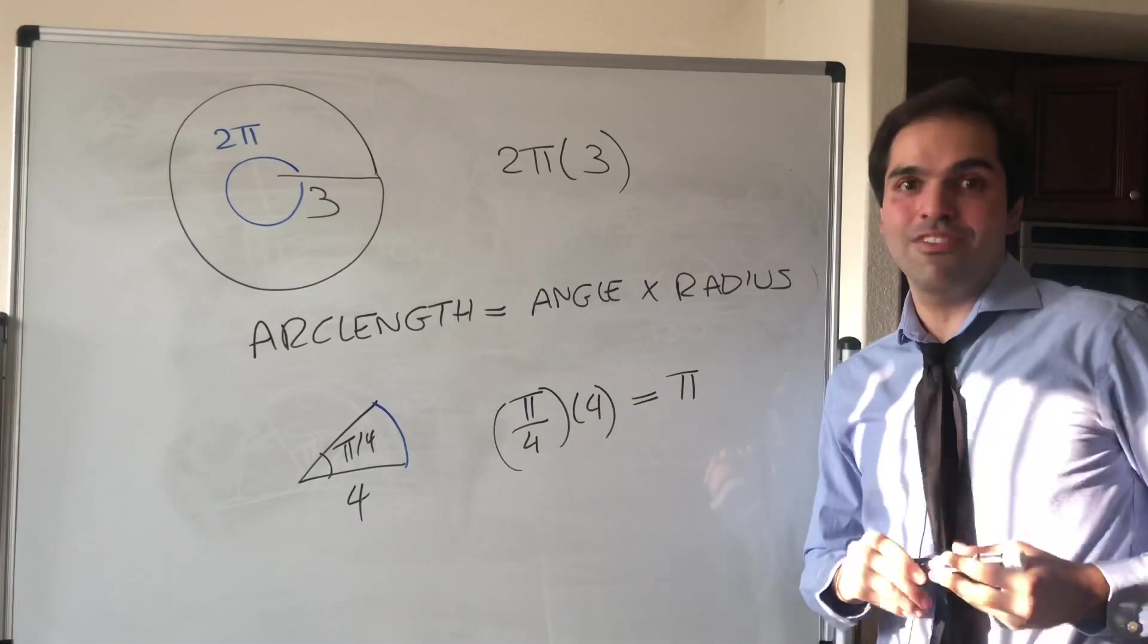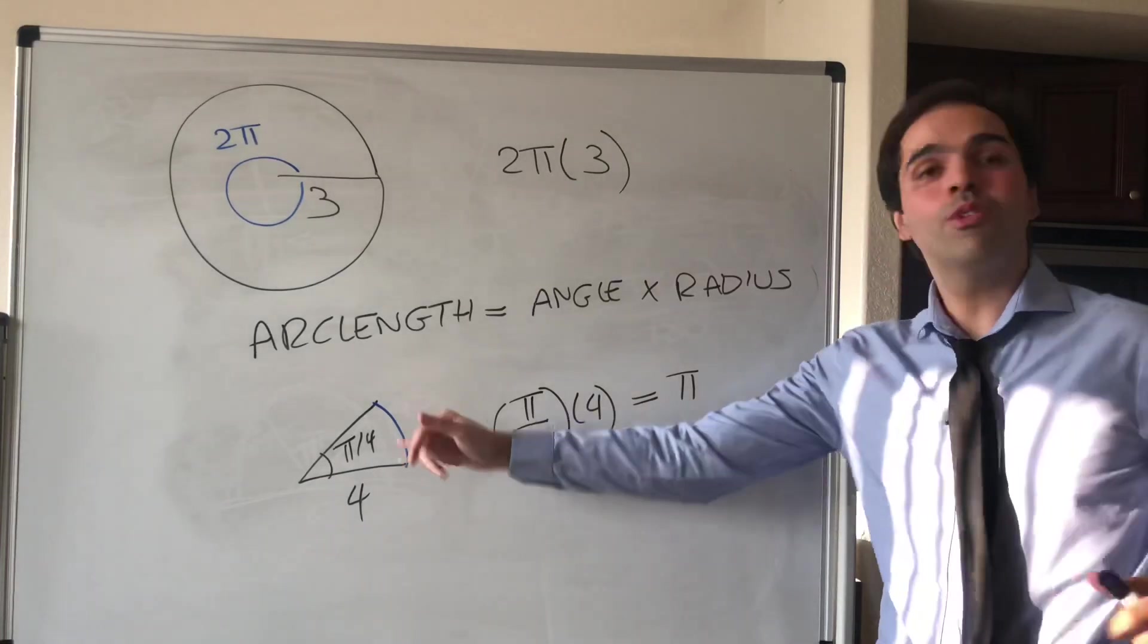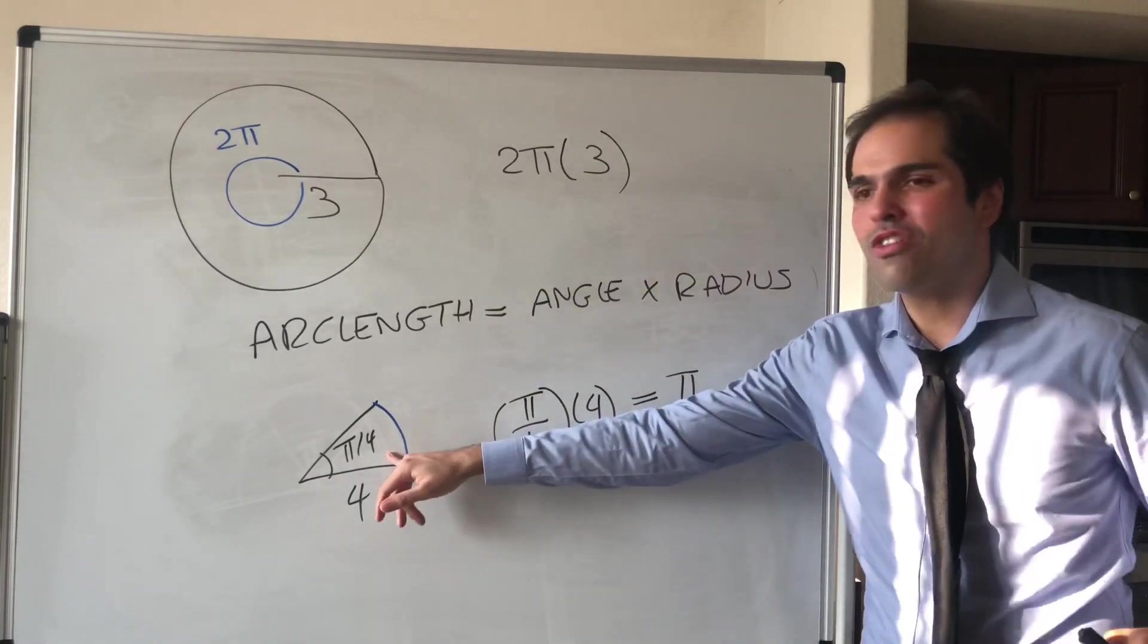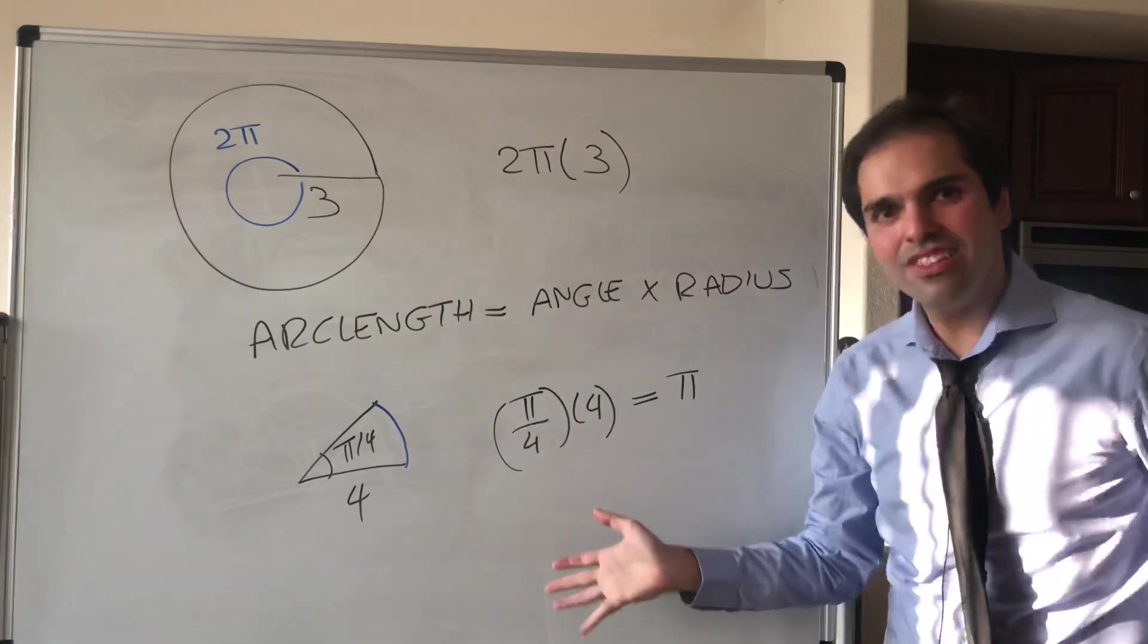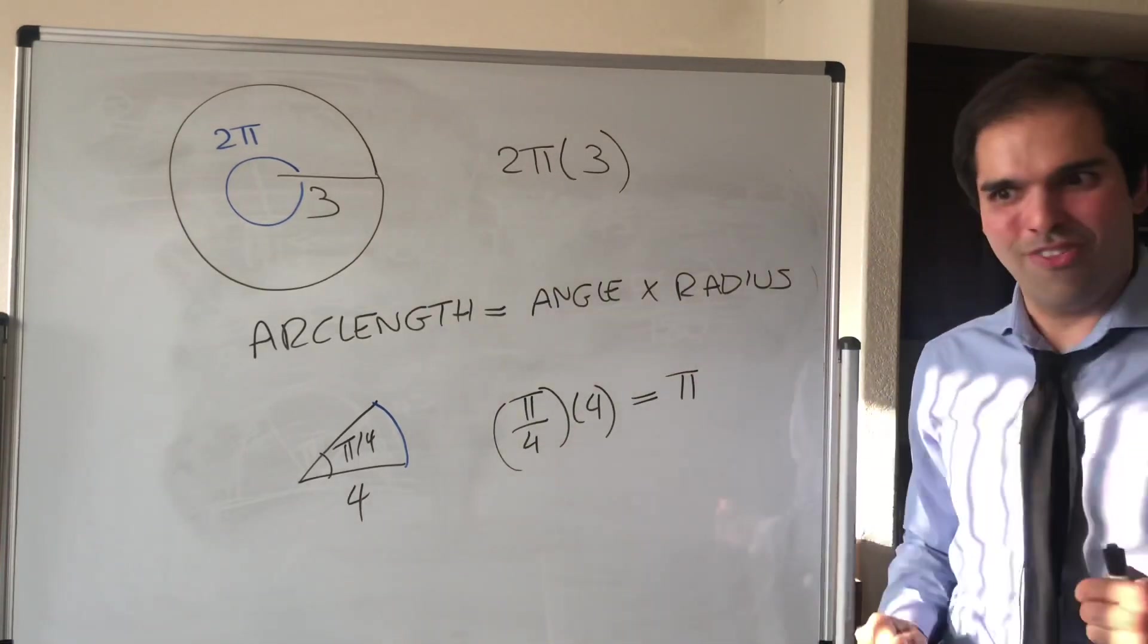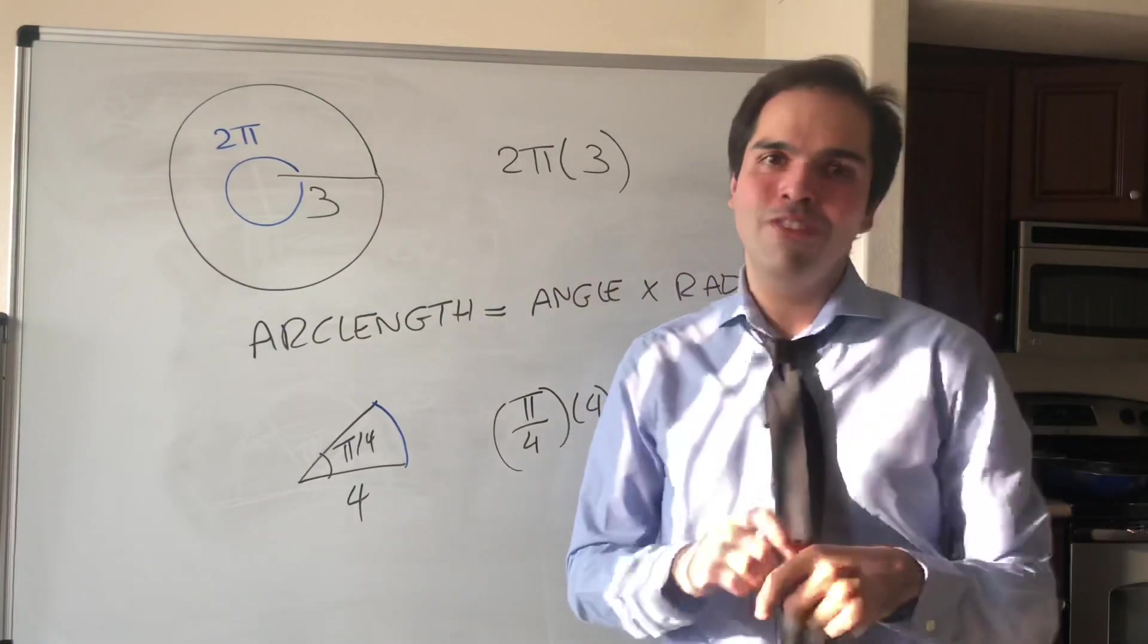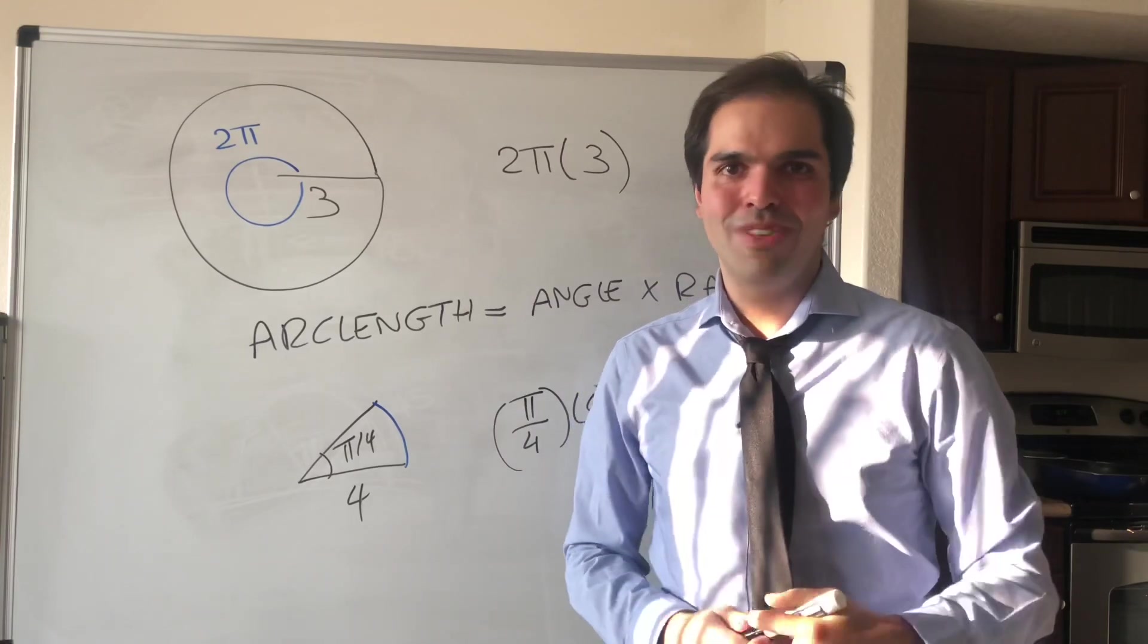You see, you cannot do that with degrees. With degrees, what we would have to do is convert 45 degrees into radians and then use a formula. That's why in math we really like radians. They make stuff much easier.